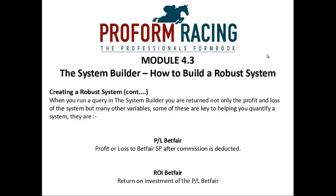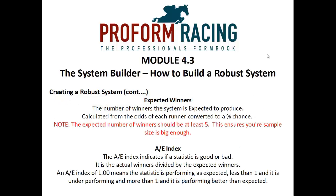When you run a query in the system builder, you are returned not only the profit and loss of the system but many other variables. Some of these are key to helping you quantify a system. They are: PL Betfair — the profit or loss to Betfair SP after commission deducted; the return on investment to the profit/loss Betfair; expected winners — the number of winners the system is expected to produce, calculated from the odds of each runner converted to a percentage chance. Note that expected winners should be at least five to ensure your sample size is big enough. The AE index indicates if a statistic is good or bad — it is the actual winners divided by the expected winners. An AE index of one means the statistic is performing as expected; less than one means underperforming; more than one means performing better than expected.